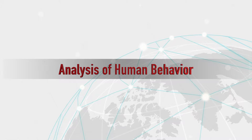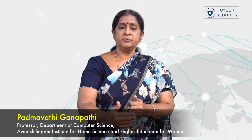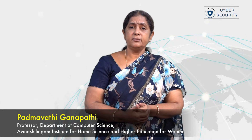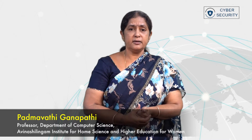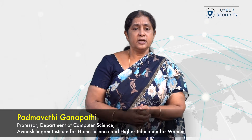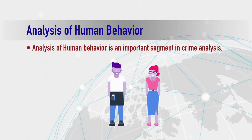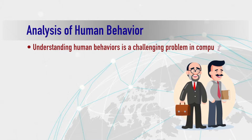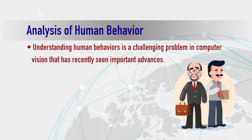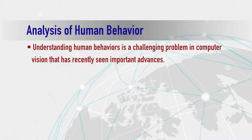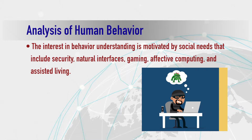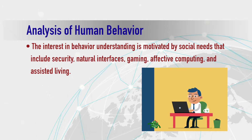Analysis of human behavior is the first and very important step towards crime prediction, crime analysis, and crime investigation. The analysis of human behavior is an important segment in crime analysis. Understanding human behaviors is a challenging problem in computer vision that has recently seen important advances.